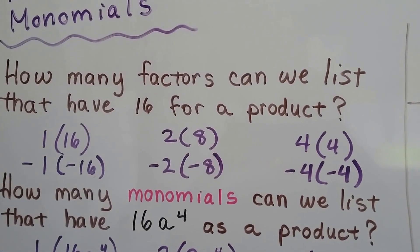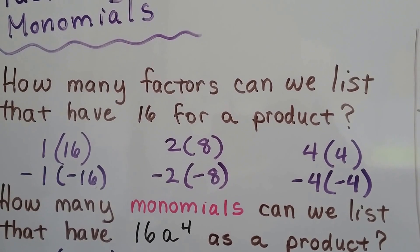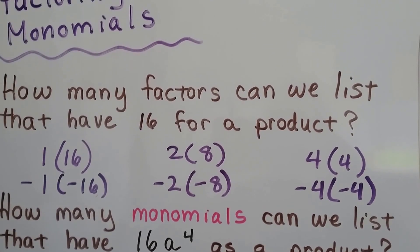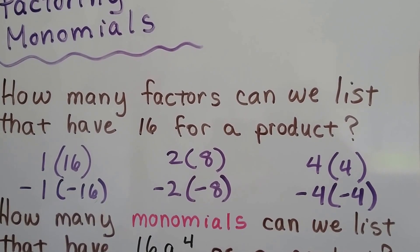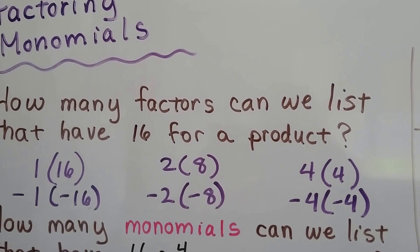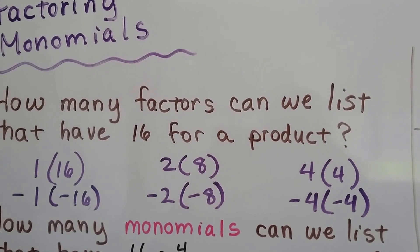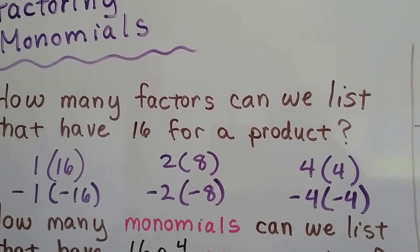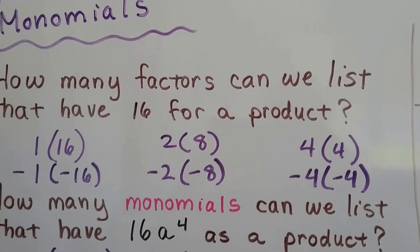How many factors can we list that have 16 for a product? 1 and 16, even a negative 1 and a negative 16, 2 and 8, or a negative 2 and a negative 8, and 4 times itself, or a negative 4 times a negative 4, that makes a positive 16.